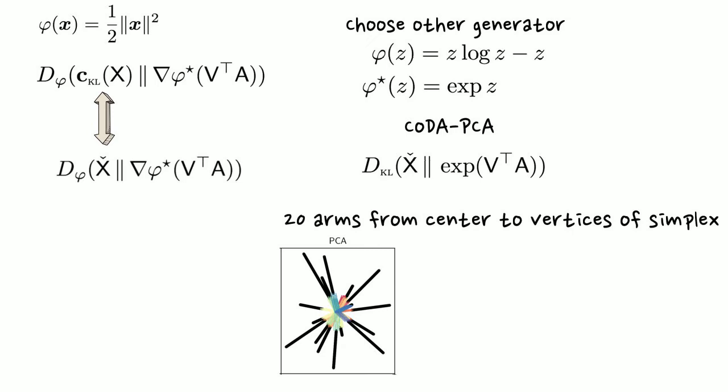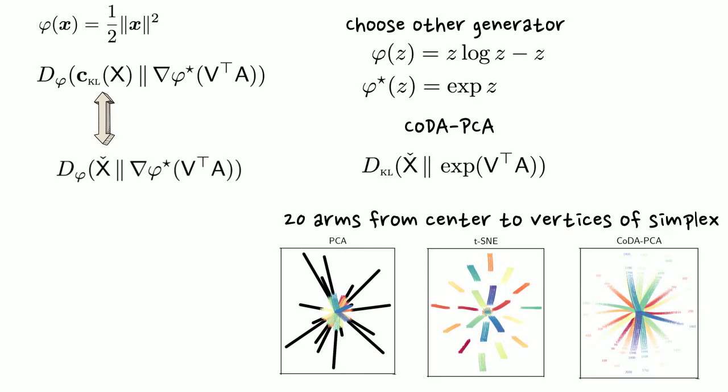PCA can result in projected points lying outside the simplex, which is not ideal. t-SNE does not respect the geometry of the space. Our method, CODA-PCA, produces a satisfying result.